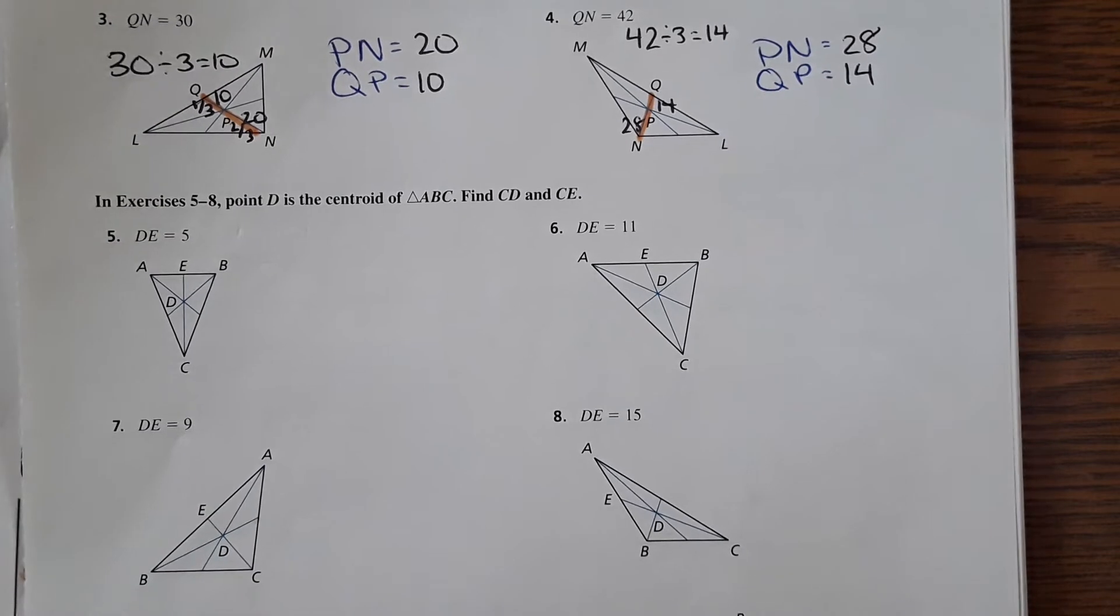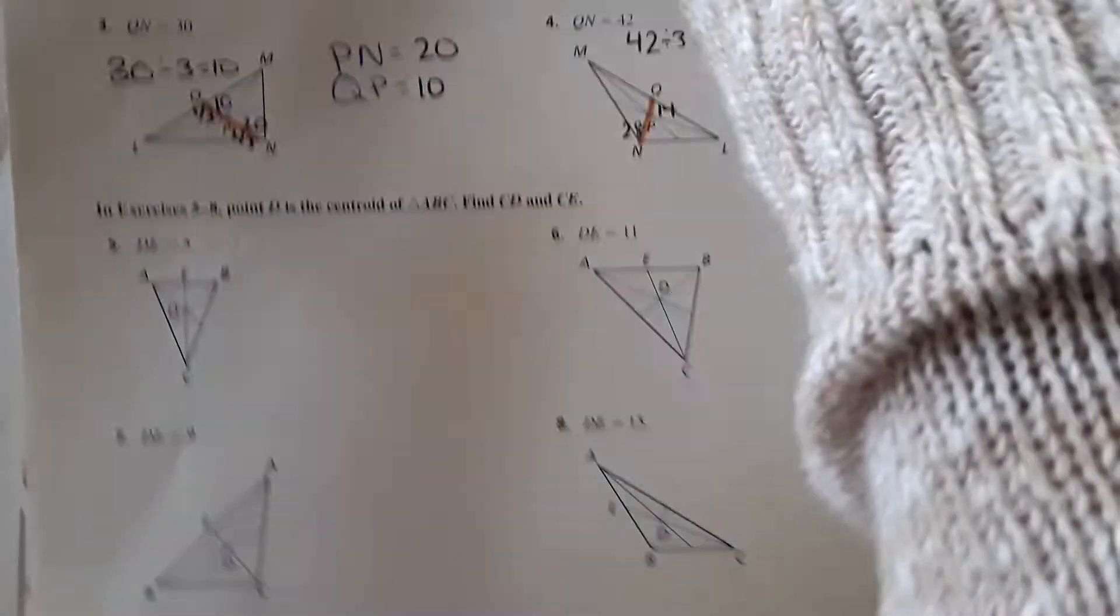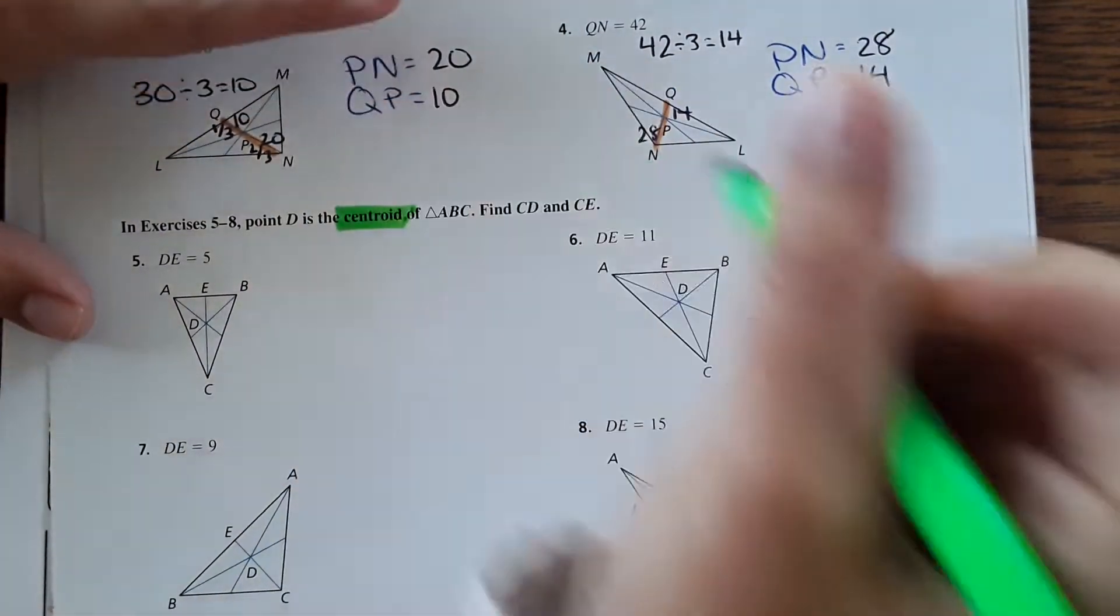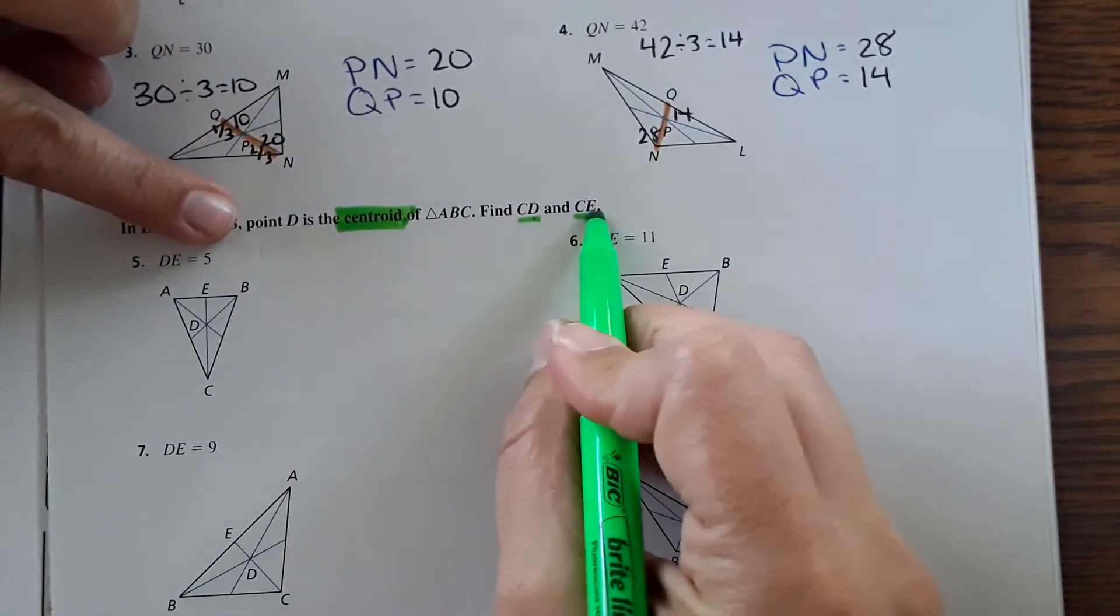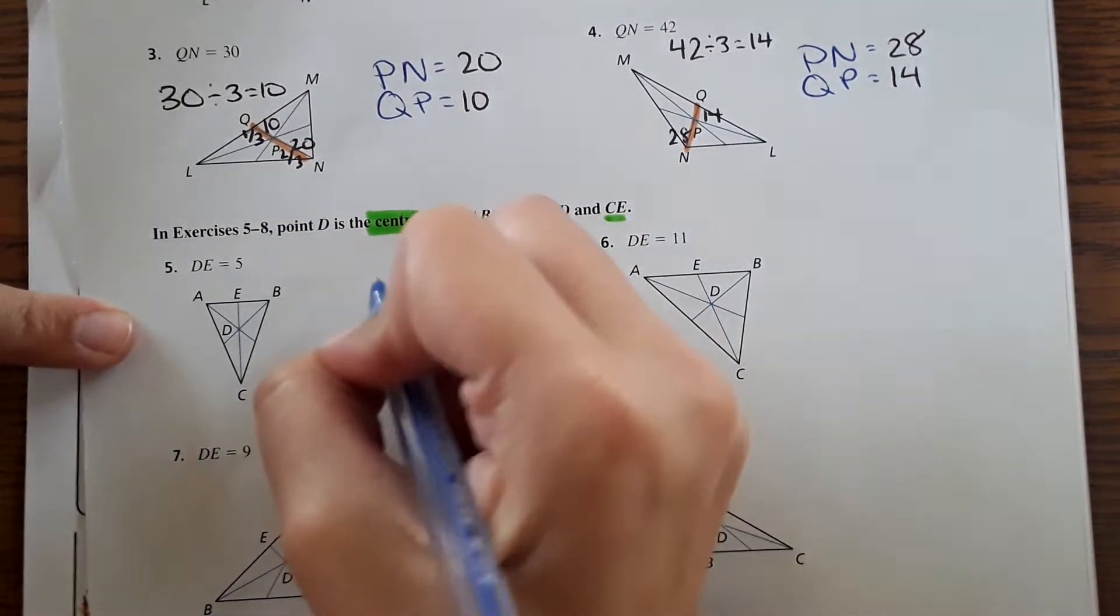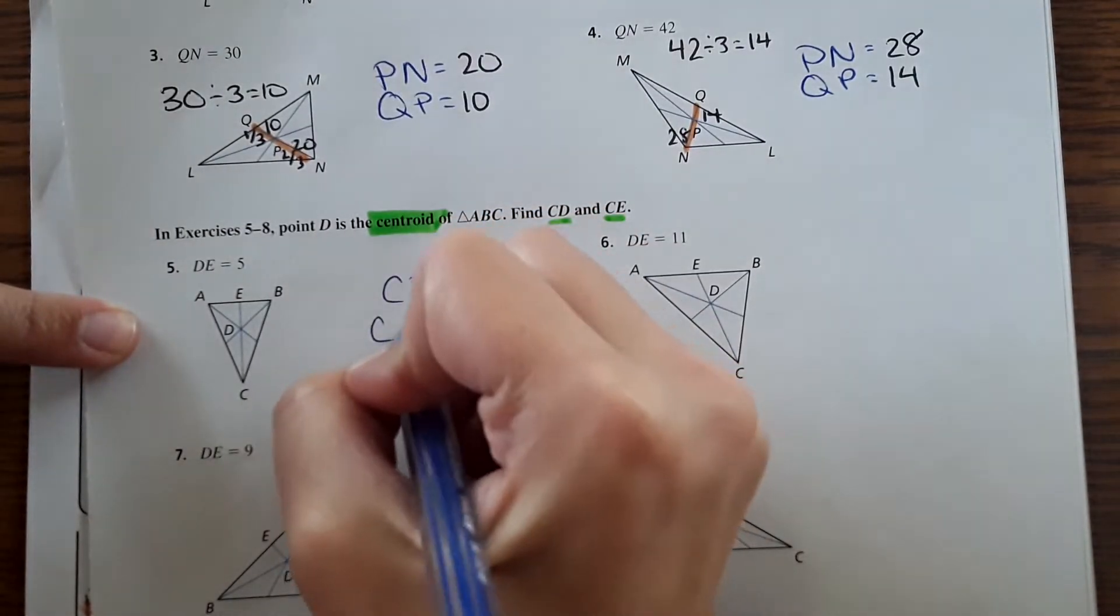Okay, so next set of problems. Same thing—centroid. Now for all of these problems, we're finding CD and CE. So I'm going to write that down for each of them so I can just fill it in. So CD equals, CE equals.